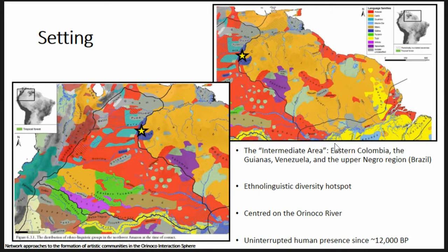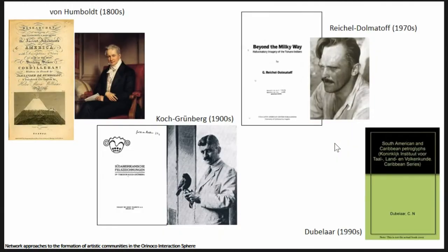The Orinoco is actually connected to the Negro, which is part of the Amazon, through the Casiquiare distributary river. So it's possible to cross all these regional divides via the Orinoco. That being said, there is an uninterrupted human presence since above 10,000 BP, so I'm not talking about necessarily later cultures alone when discussing the rock art record — there is indeed some very old archaeology associated with the rock art here.